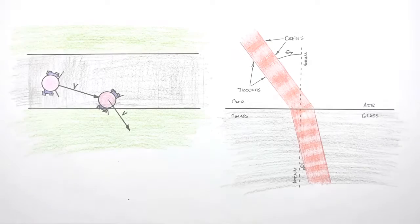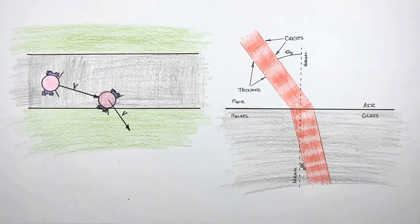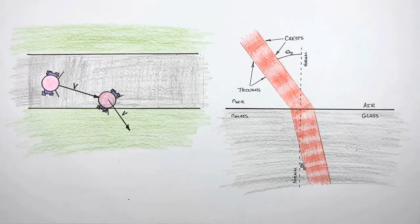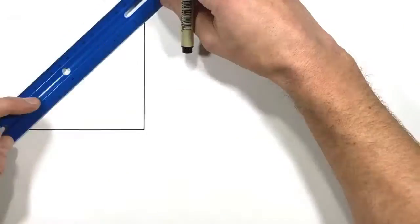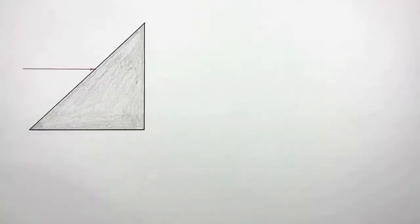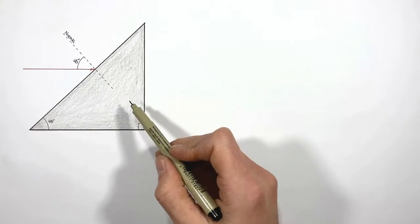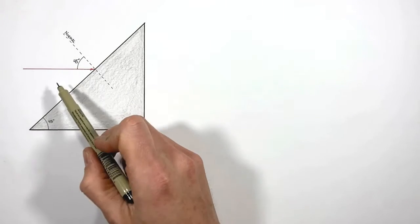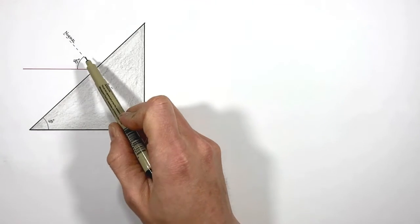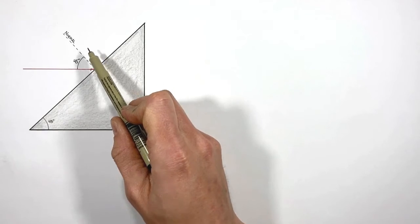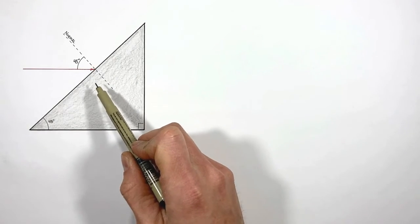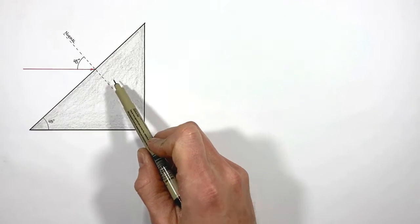So let's use Snell's law to calculate just how much light is going to bend as it passes through a prism. In this problem, an incident ray strikes a glass prism like this at an angle of 45 degrees from the normal.